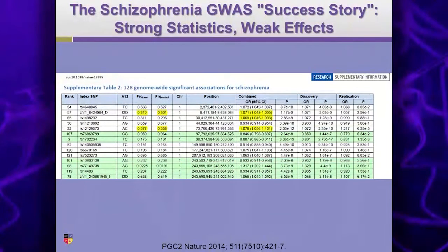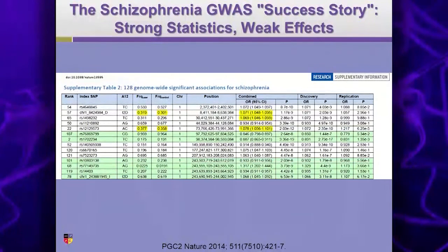But the inconvenient truth here is the reason this is so significant is because this is 150,000 people, where you have enormous statistical power to see tiny differences between populations.